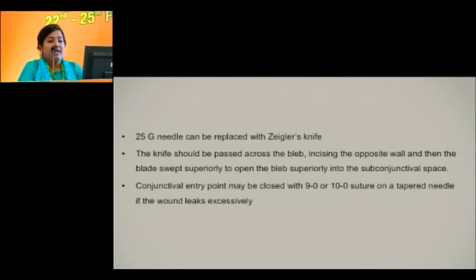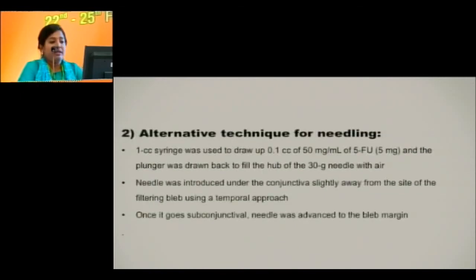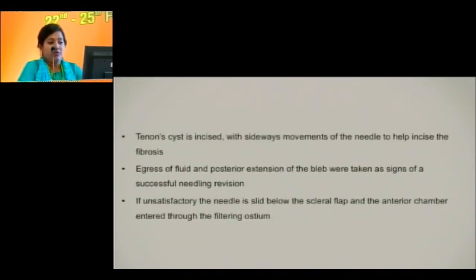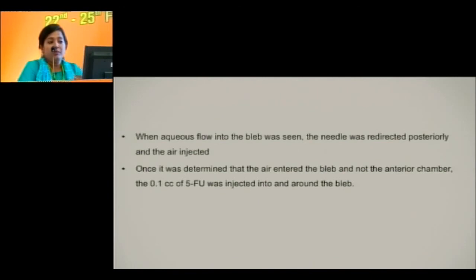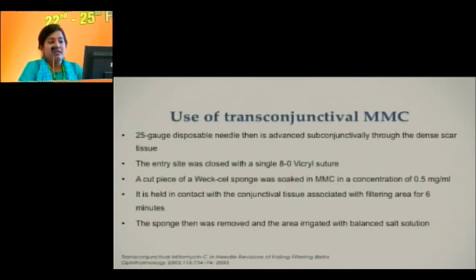We can replace the 25-gauge needle with a Ziegler's knife. In an alternative technique, a 1 cc syringe is filled with 0.1 cc of 5-fluorouracil (50 mg/ml), the plunger drawn back slightly, and the 30-gauge needle hub filled with air. The Tenon's cyst is incised, adequate dissection is performed, air is injected to confirm it does not enter the anterior chamber, and then 5-fluorouracil is injected around the bleb. Studies have also used trans-conjunctival mitomycin C — a Merocel sponge soaked in MMC 0.5 mg/ml held in contact with conjunctival tissue of the filtering area for 6 minutes, then washed off with balanced salt solution.